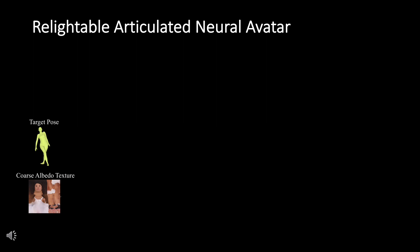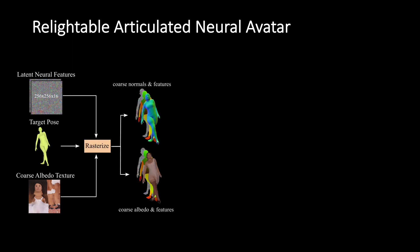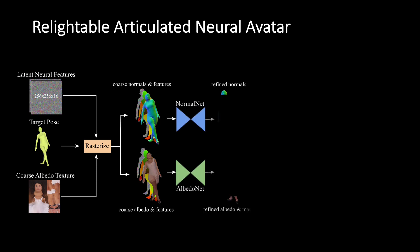The coarse albedo texture and geometry obtained so far lack photorealism and fine-grained details of the person. RANA utilizes the coarse geometry and albedo map and generates photorealistic images of the person. For this, we first augment the coarse geometry and texture with learnable latent features to capture fine-grained details. Given the target body pose, we then rasterize the coarse albedo texture, coarse normals, and neural features in the target image space, and process them using two separate neural networks — NormalNet and AlbedoNet — each responsible for producing refined normal and albedo maps, respectively.